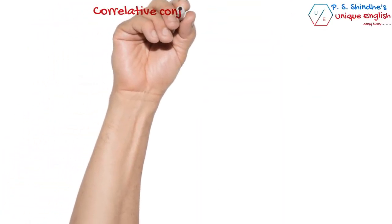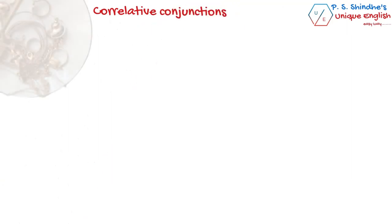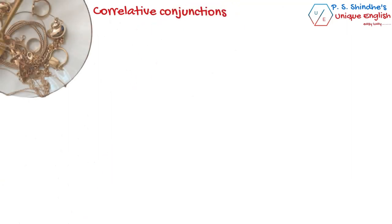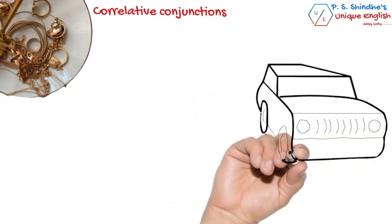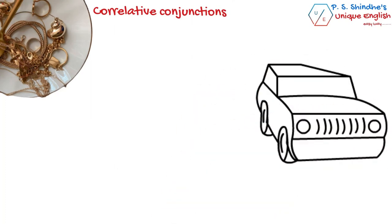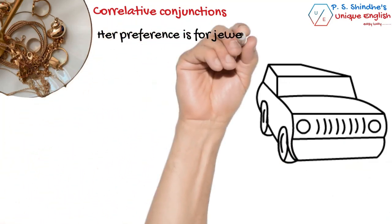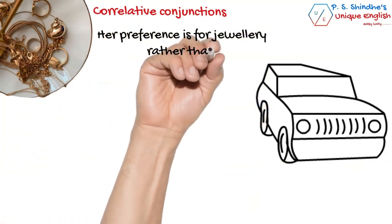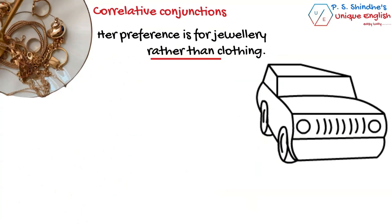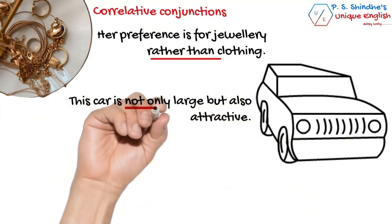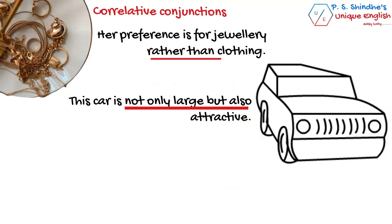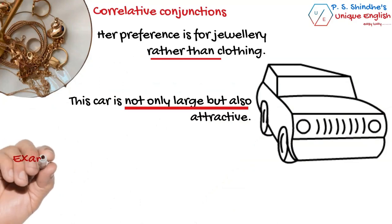Correlative conjunctions. There is not much difference between coordinating conjunctions and correlative conjunctions. Correlative conjunctions are sets of words we always use in duos — they are also called paired conjunctions. For example: 'Her preference is for jewelry rather than clothing' — here 'rather than' is a correlative conjunction. 'This car is not only large but also attractive' — 'not only...but also' is a paired conjunction.